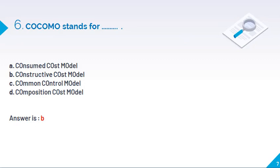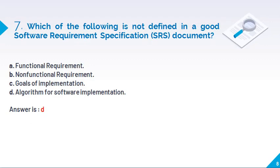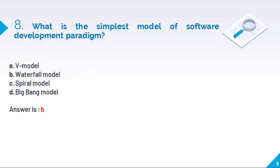CoCoMo stands for, so the answer is Constructive Cost Model. Which of the following is not defined in a good software requirements document? So the answer is algorithm for software implementation, because we cannot easily write the algorithm for this software development. We have to just put the diagram of the algorithm. We cannot write in any SRS. Right. What is the simplest model of the software development? As you know, waterfall model or linear model is a simple model for the software development.